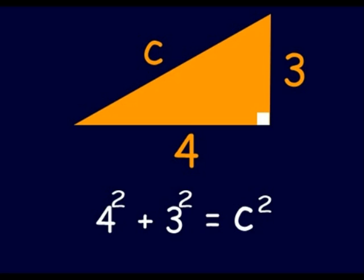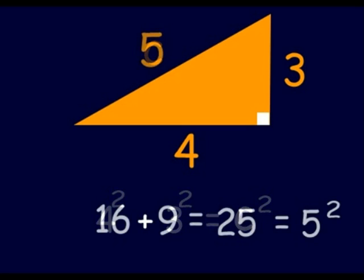4 squared plus 3 squared equals C squared. When you solve the problem, you would square 4 giving you 16 plus 3 squared giving you 9 equals 25. You would take the square root of 25 and it will be 5.